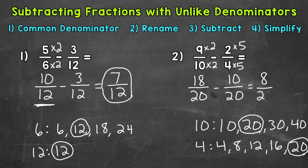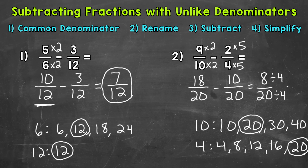Keep the denominator of 20. Our answer is 8 twentieths. Now 8 twentieths can be simplified — there are multiple paths, but if we use the greatest common factor between 8 and 20, which is 4, we can simplify it in one step. So 8 divided by 4 and 20 divided by 4 gives us a simplified answer of 2 fifths. Now just to be clear, 8 twentieths is the correct answer, but we were able to simplify that fraction to get 2 fifths as our final simplified answer.